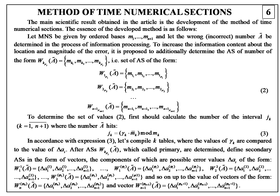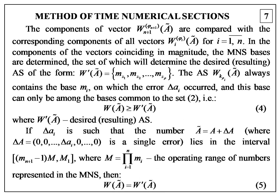To determine the set of values in expression 2, one should first calculate the number of the interval jk where the number a falls, using expression 3. In accordance with expression 3, compile k tables of alternative sets, which are called primary. Then define secondary alternative sets in the form of vectors as represented on this slide. The components of vectors are compared with the corresponding components of all vectors, and the coinciding bases of the modular number system are determined, the set of which forms the resulting alternative set, expression 5.